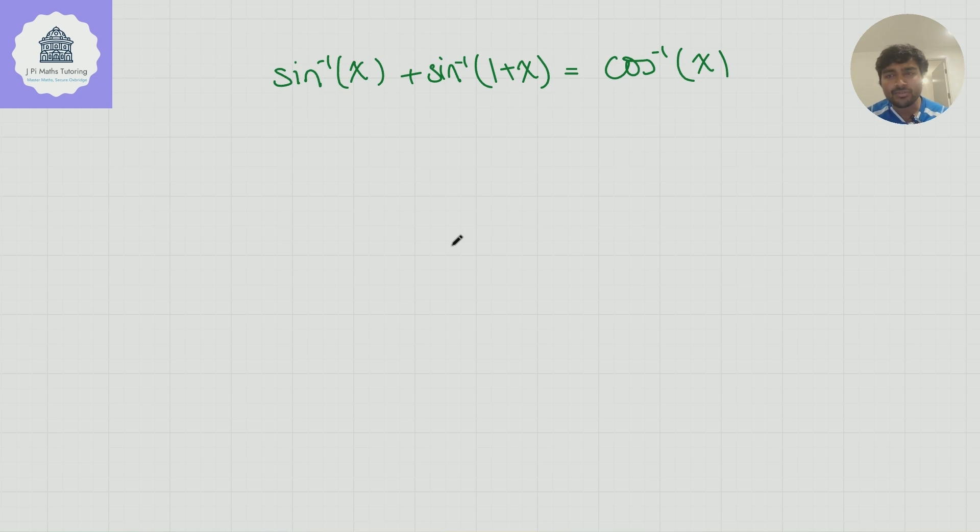Let's have a look at this. We want to solve the equation inverse sine x plus inverse sine of 1 plus x equals inverse cosine of x. Now, how can we solve this? This is a really good question. I really like this. There's a few ways you can approach this. Some ways will take longer than others. Some ways won't even get you anywhere. There's a really nice trick to solving this equation.